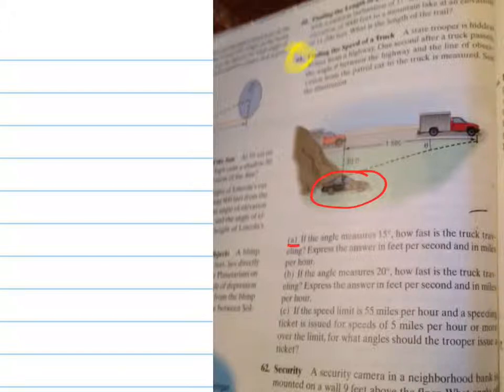A says, if the angle measures 15 degrees, so let's assume that that's 15 degrees there, how fast is the truck traveling?